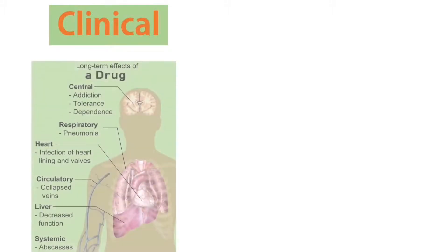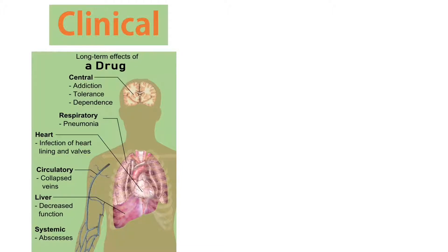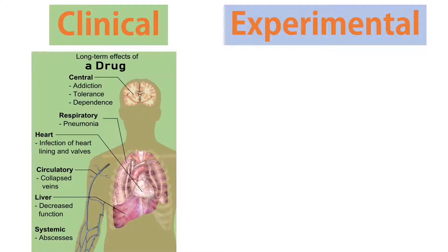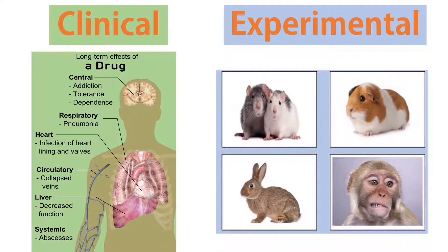There are two kinds of pharmacology. There is clinical pharmacology, which is the study of drugs' effect on human beings. They will be testing the drugs on healthy volunteers or patients. The next kind is experimental pharmacology, which studies the effect of drugs in laboratory animals — on a part of the animal or on the whole body.